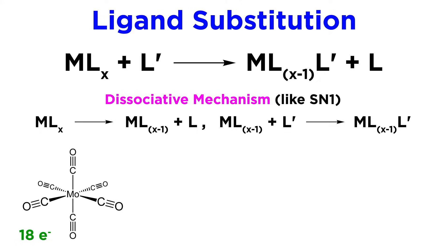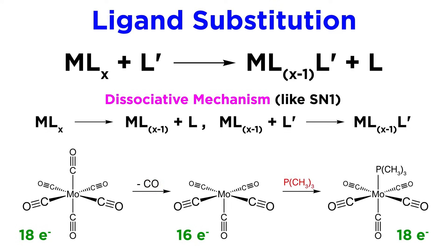For example, here is an octahedral molybdenum complex with six carbonyl ligands. If one of these is to be substituted with trimethylphosphine, a carbonyl will first dissociate to generate a 16 electron complex. Then the new ligand will associate to restore the 18 electron count.